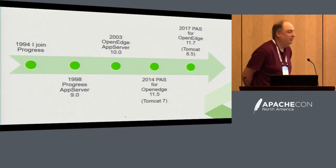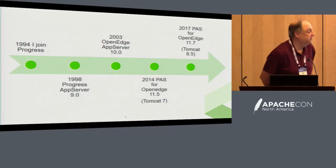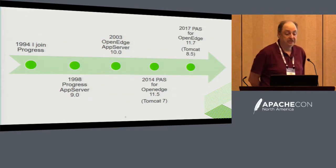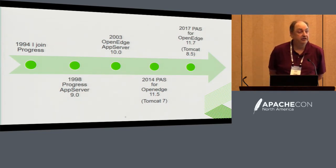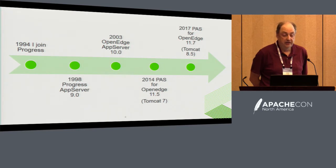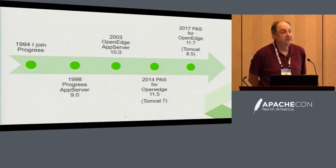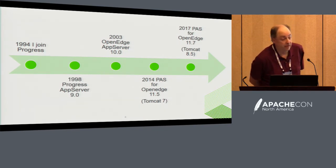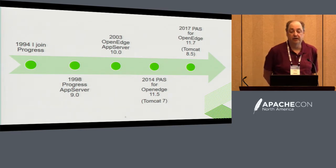In August 1984 we shipped our first version, Progress 2.2 — it wasn't completely due to the fact that nobody would buy version one of a product back in those days, but that was our first version shipped. I joined Progress in 1994. In 1998 we introduced our Progress App Server, what I'll refer to as our classic App Server, in version nine of our product. In 2003 we rebranded from Progress to OpenEdge and released OpenEdge App Server 10.0. In 2014 we released our first version of the Progress Application Server based on Tomcat, in our OpenEdge 11.5 release based on Tomcat 7. And last month we released version 11.7 now based on Tomcat 8.5.